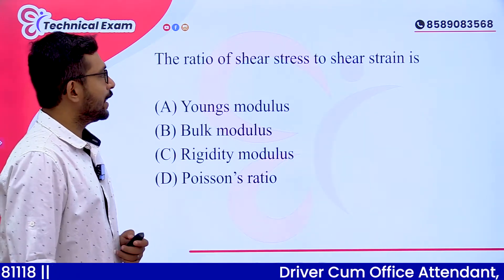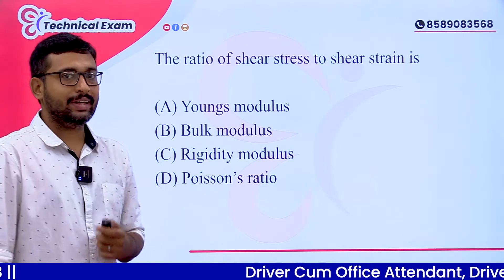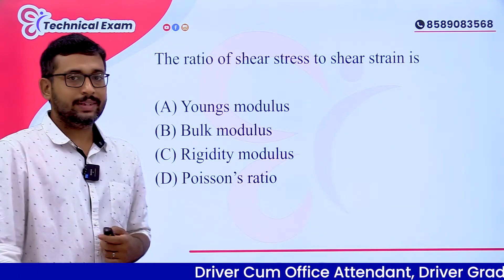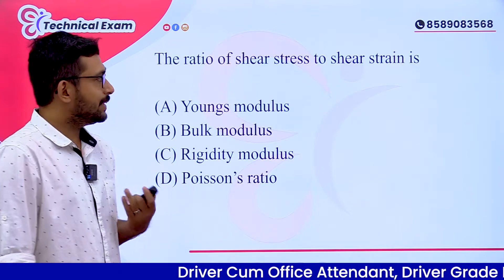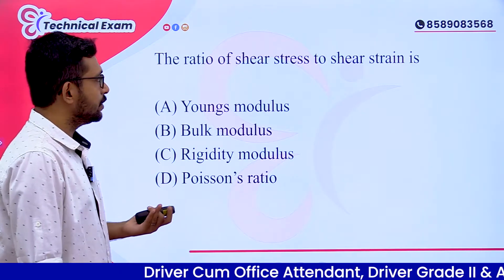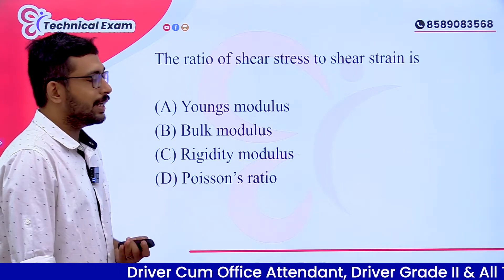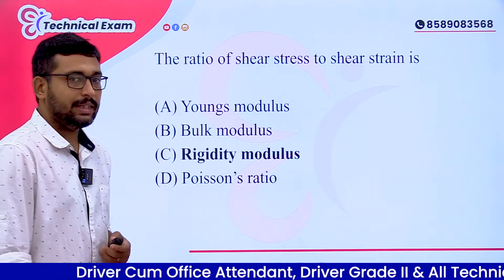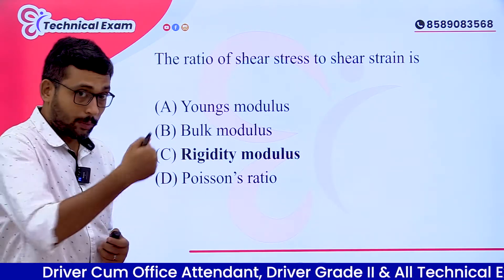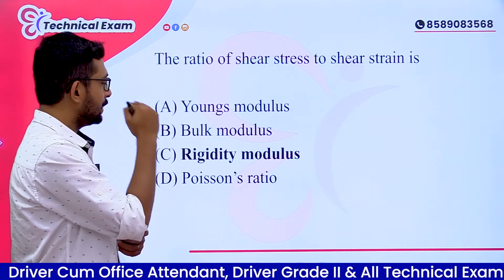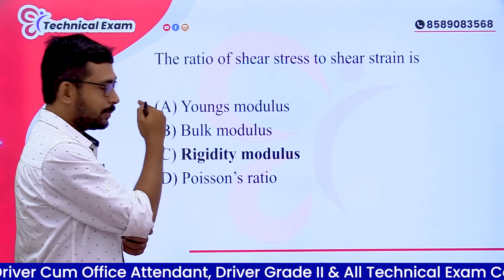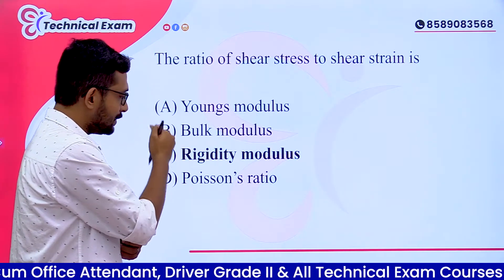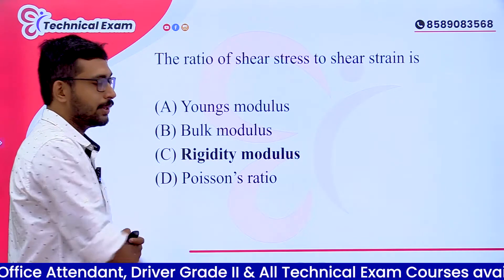The ratio of shear stress to shear strain is — what is it called? Options: A. modulus of elasticity, B. modulus, C. rigidity modulus, D. 2π radius.